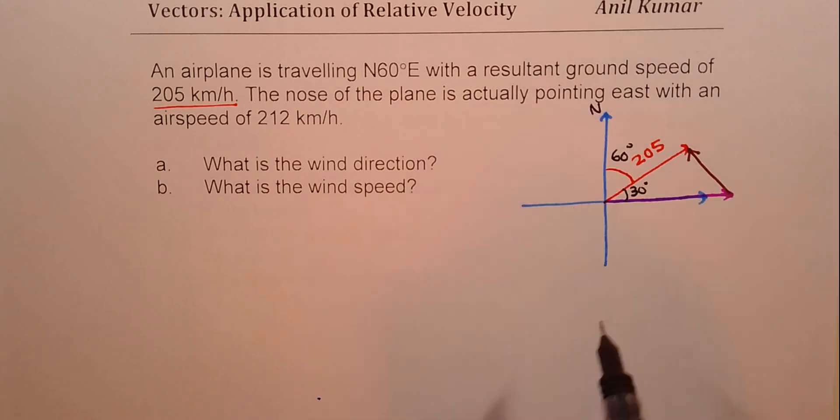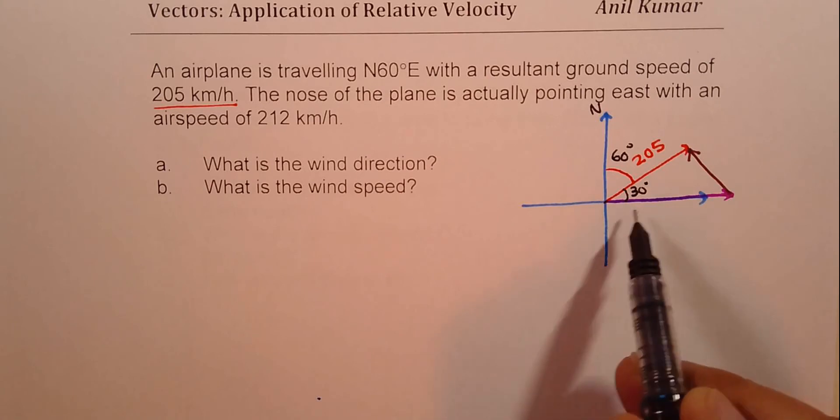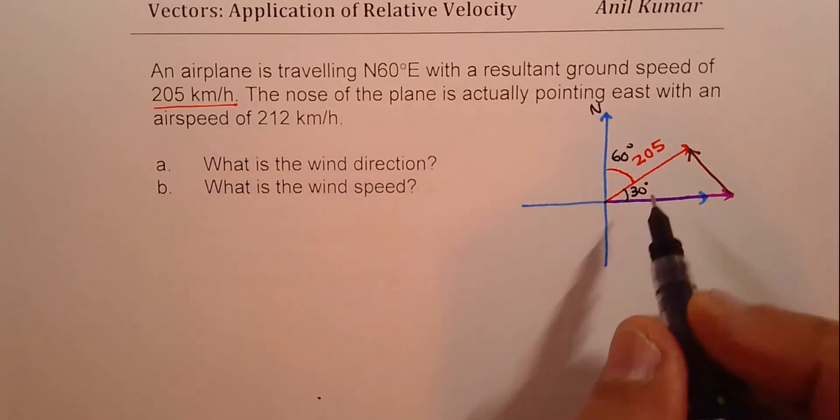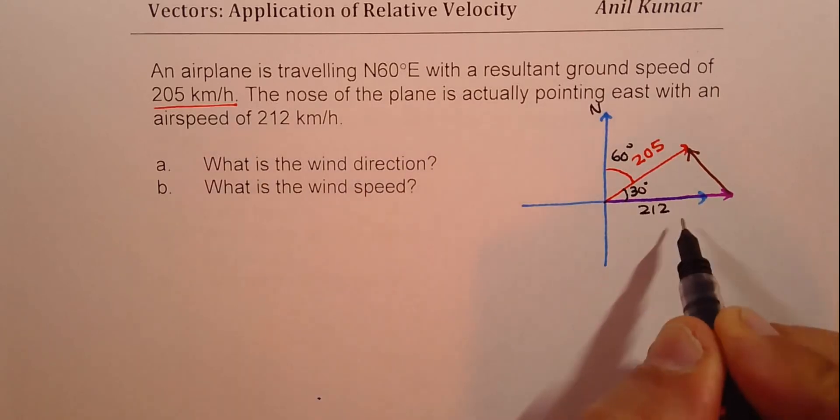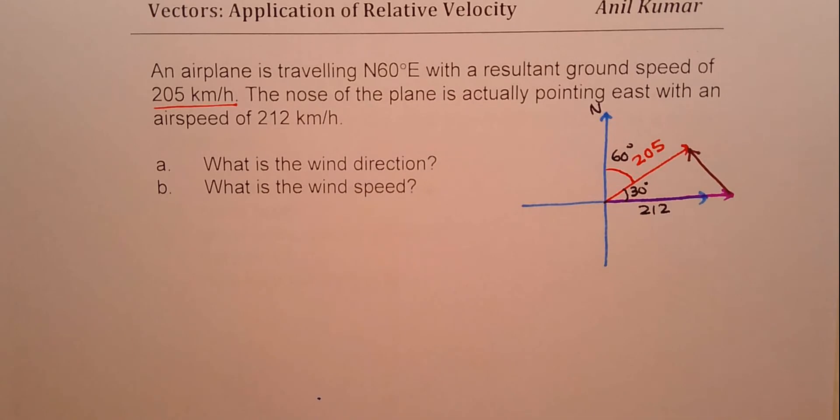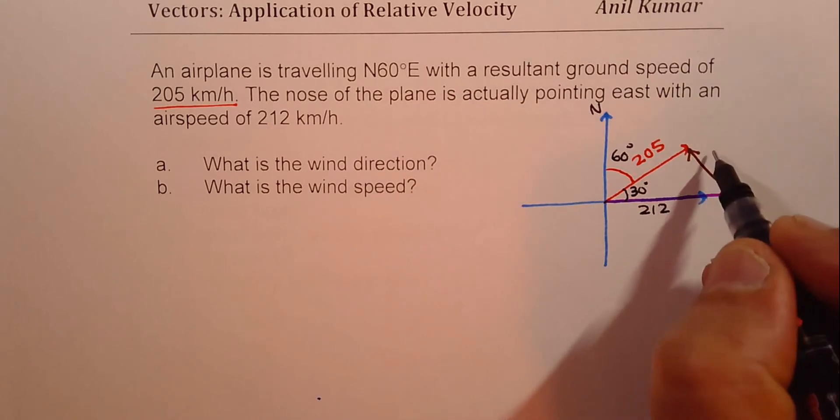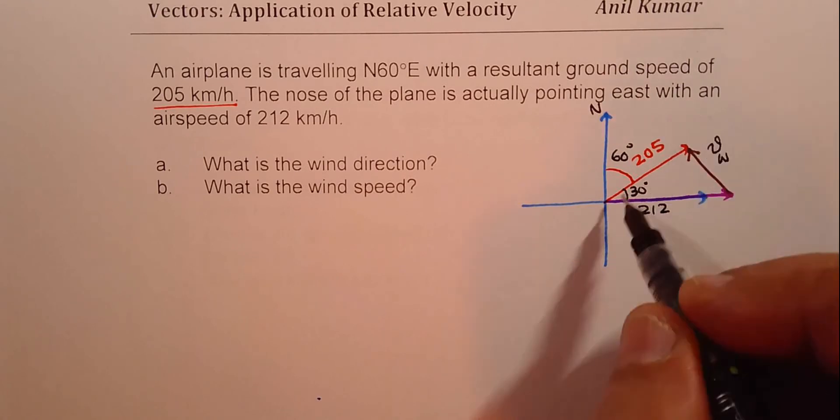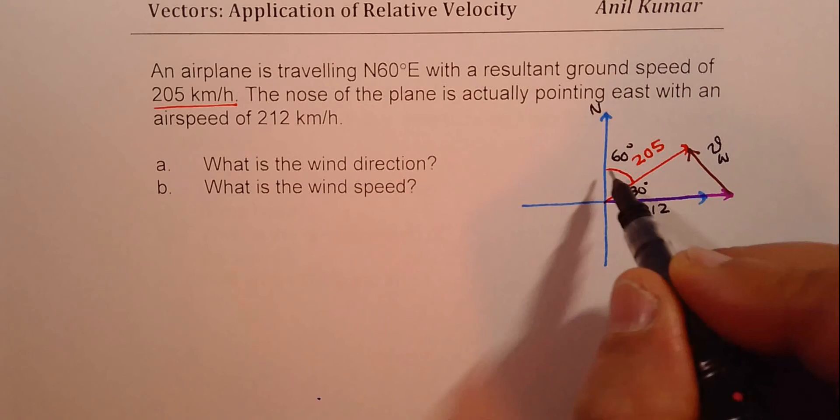Now, plane actually is going towards east at a speed of 212 kilometers per hour. But because of the wind, let us say wind velocity, the resultant is 60 degrees east of north. Is that clear?